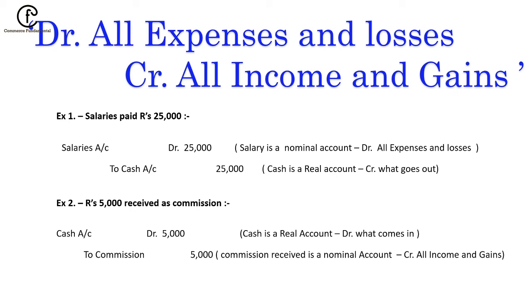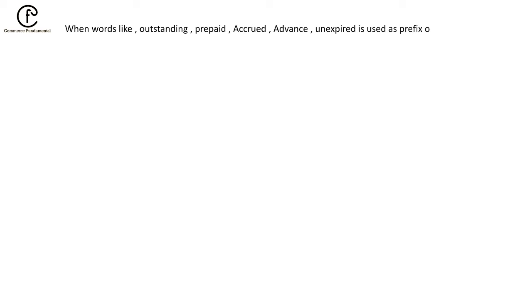This was the three golden principles of the double entry system. Now, when words like outstanding, prepaid, accrued, advanced, or unexpired are used as a prefix or suffix to a nominal account, it will become a personal account. Any expense or income with these words before or after it changes from a nominal account to a personal account.